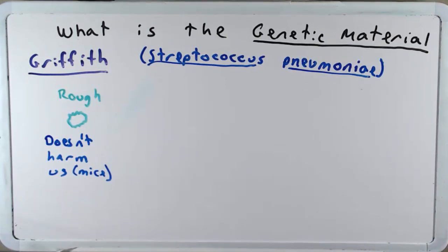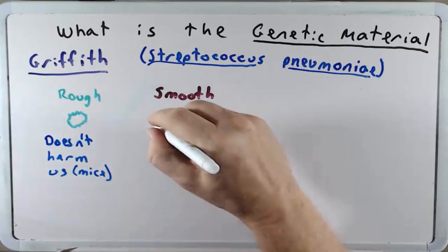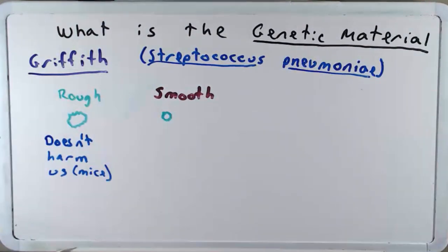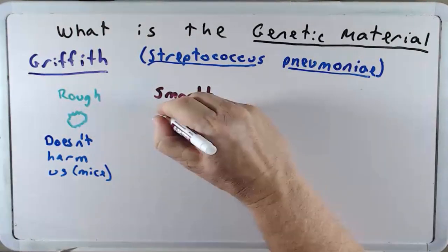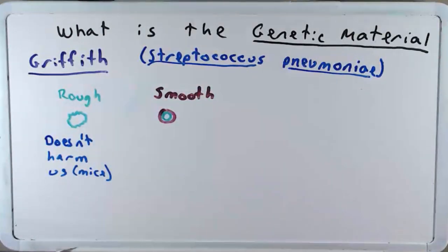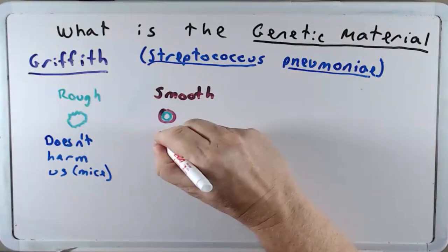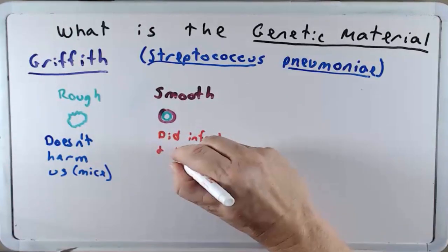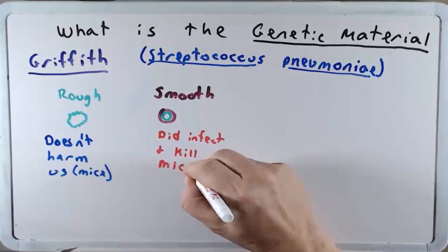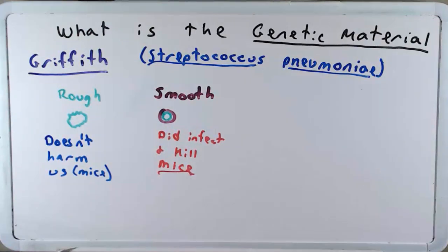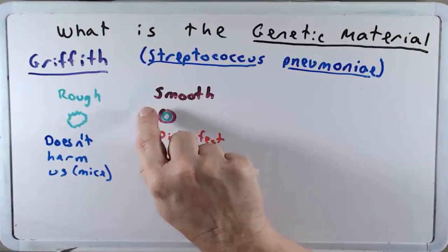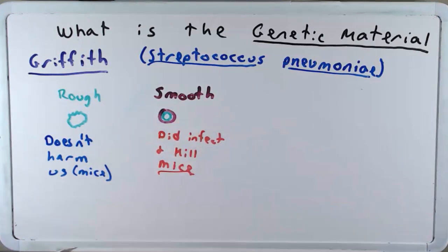The other bacterium type we're going to call smooth. It's similar to the rough bacterium except around it was a smooth coat made primarily of carbohydrates. And this one did infect and kill the mice as well as humans. And the reason it killed the mice was because the immune system could not bind to it and attack it and elicit that immune response.